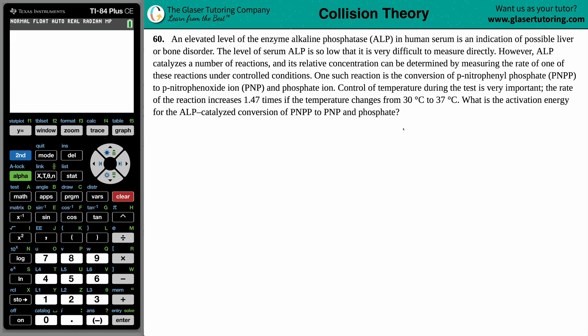Control of temperature during the test is very important. The rate of the reaction increases 1.47 times if the temperature changes from 30 degrees Celsius to 37 degrees Celsius. What is the activation energy for the ALP catalyzed conversion of PNPP to PNP and phosphate?